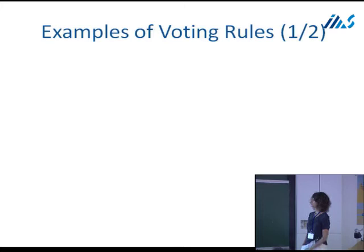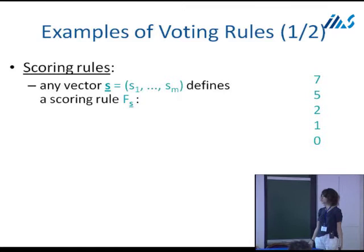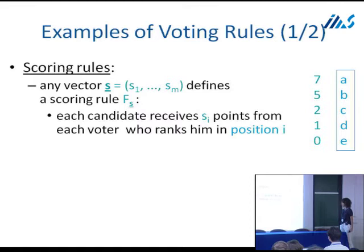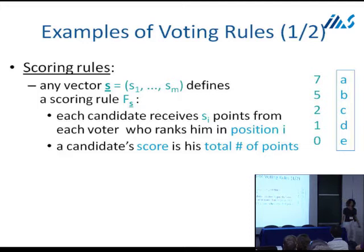Some examples of voting rules: a big class are scoring rules, which are very intuitive. A scoring rule is associated with a vector - say the vector 7, 5, 2, 1, 0 - usually assumed to be decreasing or non-increasing. Any such vector defines a scoring rule naturally: each candidate receives S_i points from each voter who ranks him in position i. So a voter ranking A, B, C, D, E gives A seven points, B five points, etc. A candidate's total score is his total points, and the candidate with the highest total score wins.